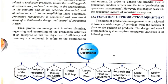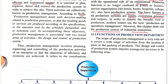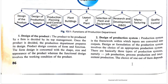Now let us understand the functions of the production department in detail. The scope of production management is very wide and covers a wide range of activities — from the location of the plant to the packing of the product. The design and control of the production system requires managerial decisions in areas such as: design of the product, design of the production system, production planning and control, plant building, layout of the plant, selection of plant and equipment, research and development, manufacturing, and quality control.